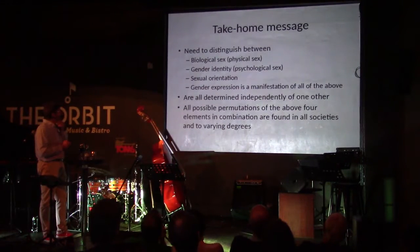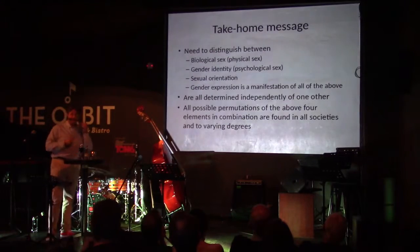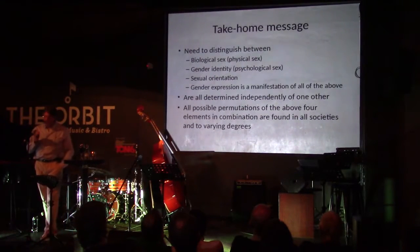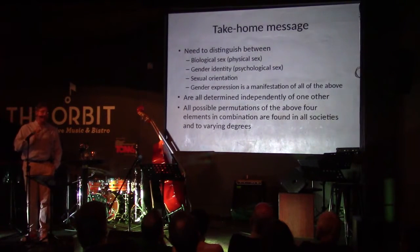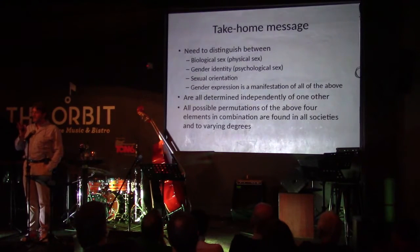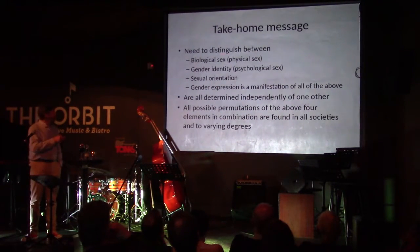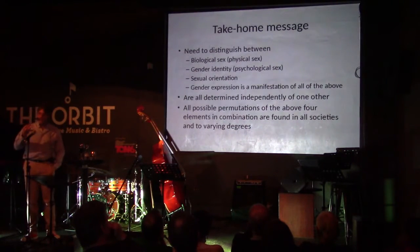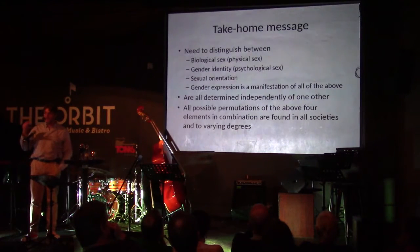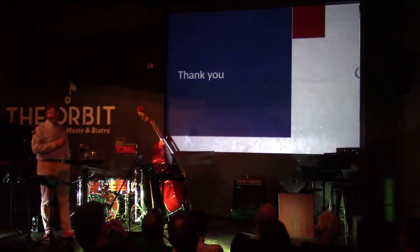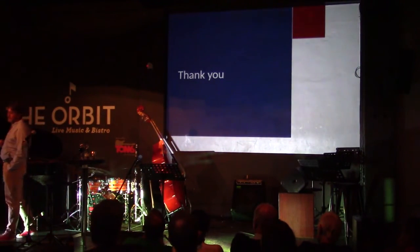My take-home message is that we need to distinguish between biological sex — physical sex — between gender identity — psychological sex — and sexual orientation. As I pointed out at the beginning, and I'd like to reiterate now, any permutation you can possibly imagine on those three elements does exist in our society, in every society, to varying degrees. The final expression of the individual from the point of gender and sexuality is a combination of all three elements, determined independently of one another. Physical sex is determined in the first trimester, psychological sex in the second trimester, and sexual orientation through a mechanism which for the moment is unknown but hypothesised to be epigenetic. Thank you for your attention — I'm very happy to take any questions.